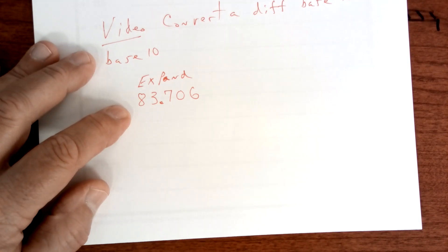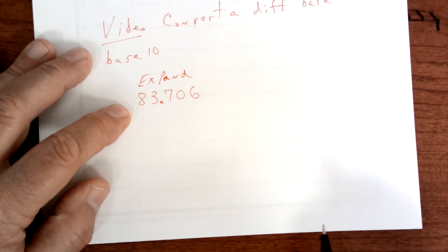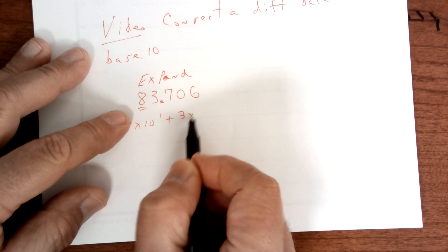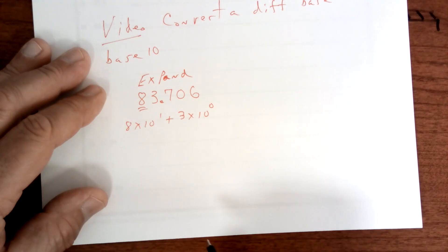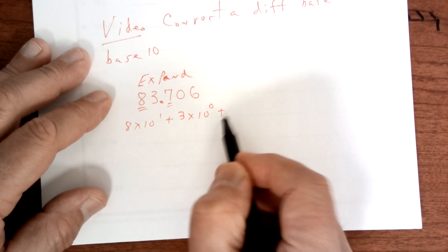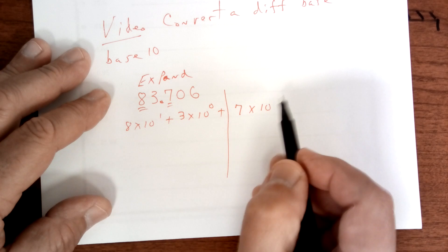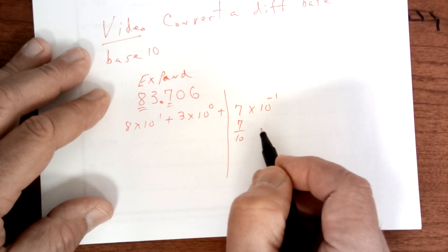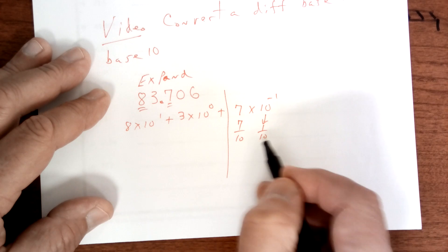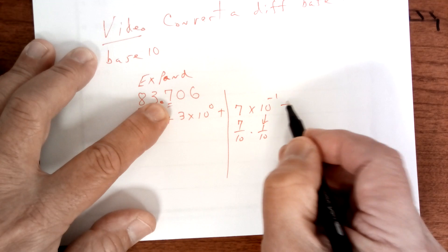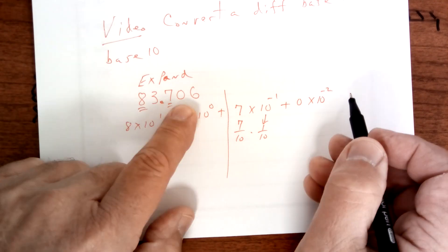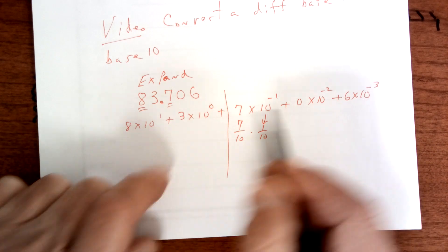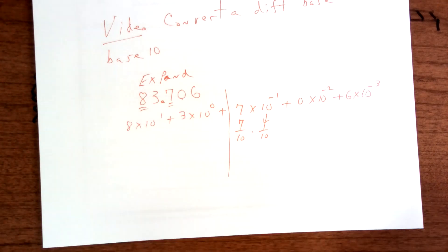I didn't talk about how to expand if you have a decimal, but I'm going to show you today. So this is in the tenth spot, so it's going to be 8 times 10 to the first power plus 3 times 10 to the zero power. Now we have decimals — this is going to be plus 7 times 10 to the negative 1. And what that is, is 7 tenths, so 7 over 10. You see, 10 to the negative 1 is really 1 over 10, and then times 7 gives you 7 tenths. Plus 0 times 10 to the negative 2 because you're in the second spot here, and 6 times 10 to the negative 3. It just goes negative 1, negative 2, negative 3. And that's what you're going to be doing today.